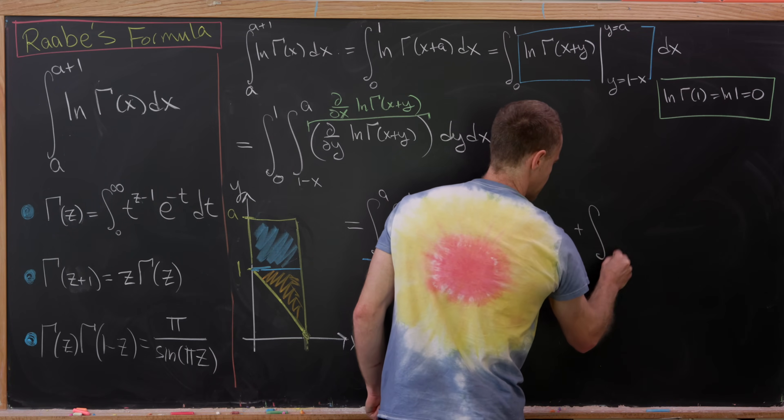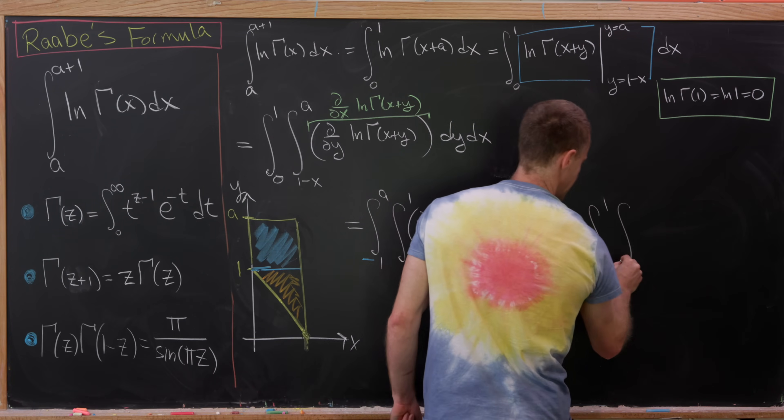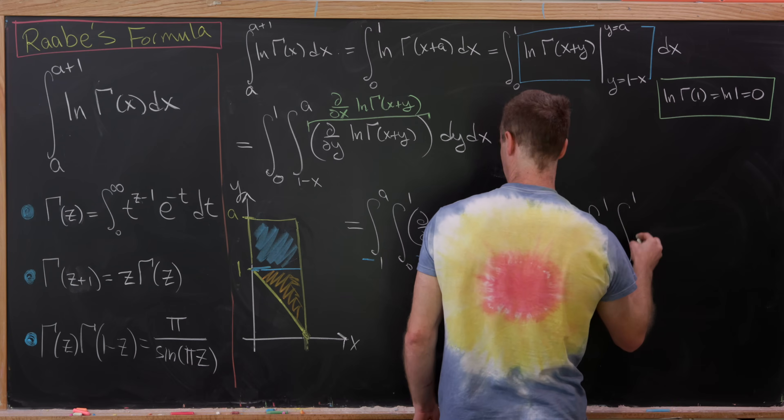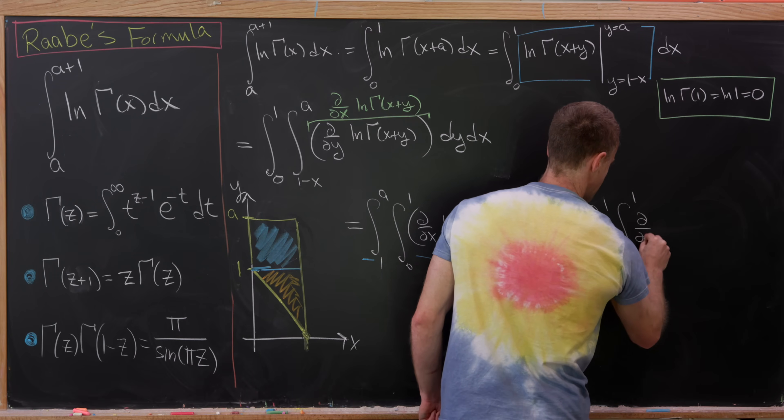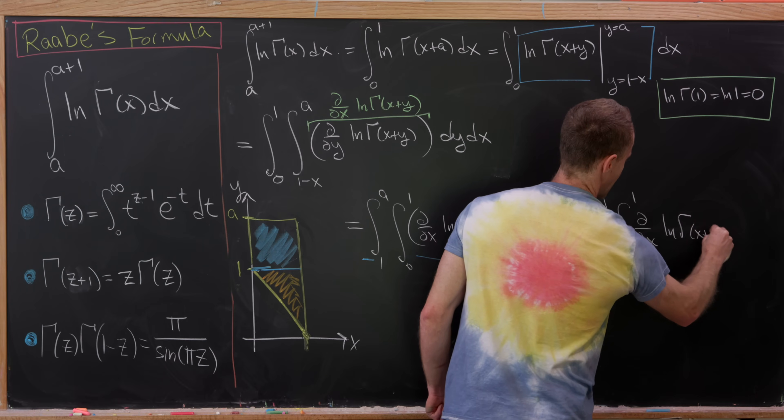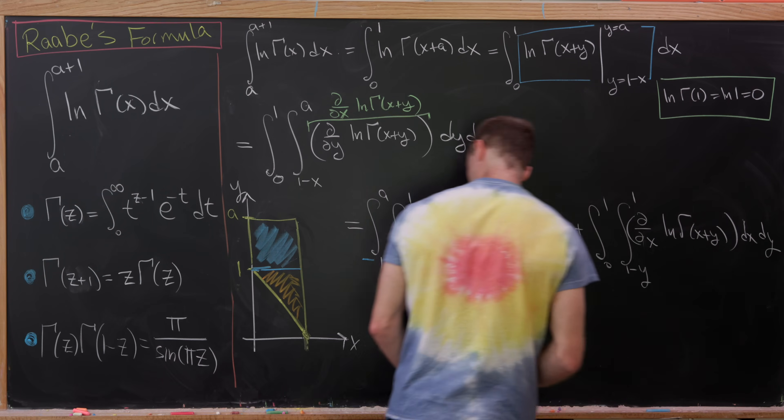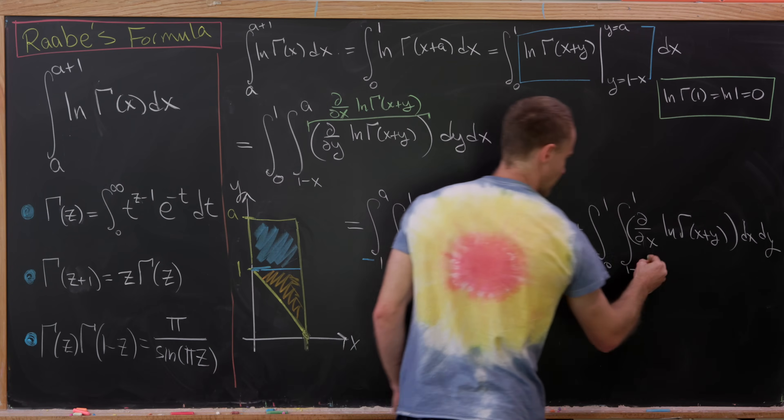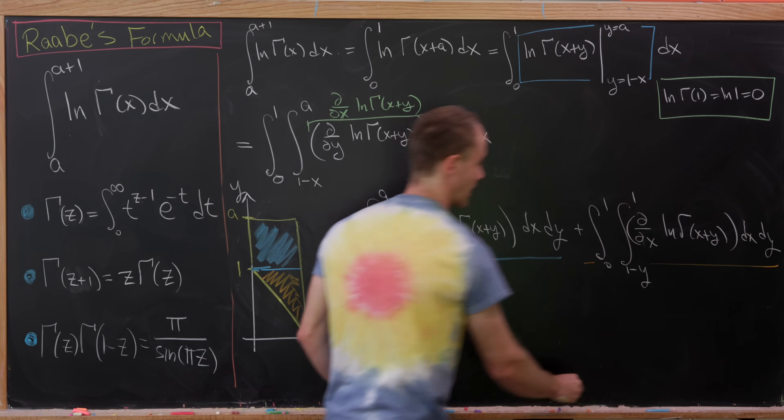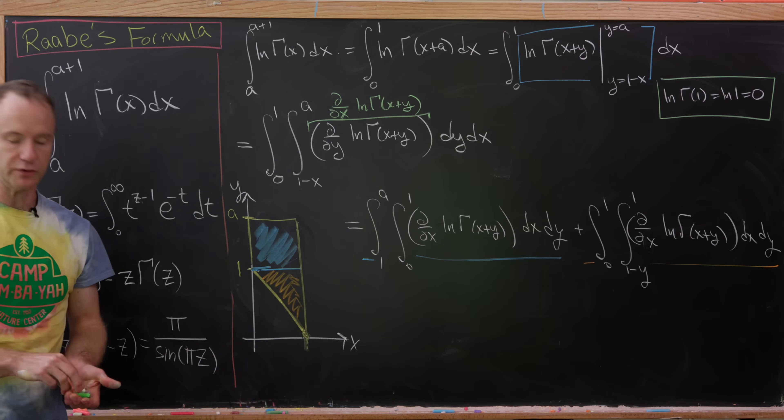Now let's see what we have for the other bit. So that'll give us the integral from 0 to 1 and then the integral from 1 minus y to 1 of the partial with respect to x of the log of gamma of x plus y. And then again, it'll be dx dy. So just as before, this will be that other thing, so the orange integral and the blue integral.